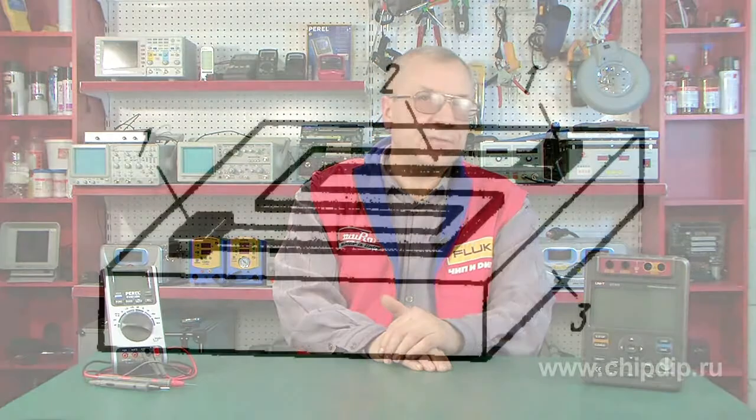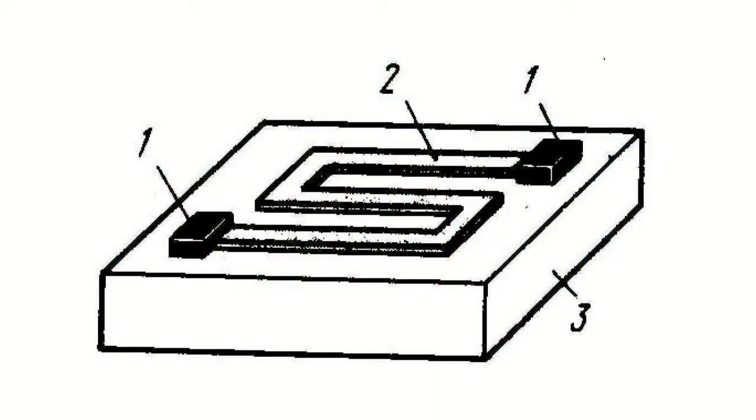A resistance film of a certain configuration is applied to the insulating base of a hybrid integrated circuit. The figure shows that 1 is metallic electrodes, 2 is the resistive film, and 3 is the dielectric base.